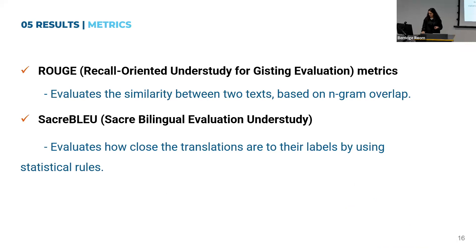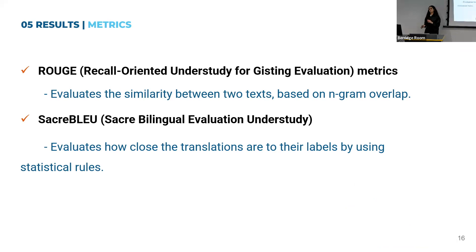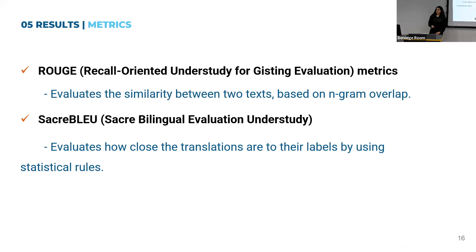Before presenting the results, I want to talk about the metrics I used. To evaluate summarization tasks, the ROUGE metrics were used, which evaluate similarity between the generated summary and the one produced by a radiologist based on n-gram overlap. For the translation task, I used the SacreBLEU metric, which evaluates how close translations are to their reference labels.